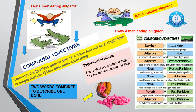Compound adjectives can be made by using different word groups, and they have different meanings. Have a look at the table in front of you — how we can use adjectives and nouns, and nouns and present participles, to make different compound adjectives, all with different meanings.